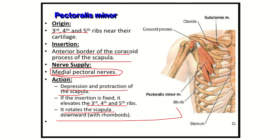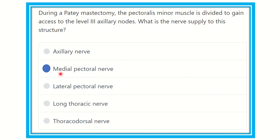These three actions are usually not the most important to remember, but we must know the origin — third, fourth, and fifth ribs — and the insertion into the coracoid process. The pectoralis minor is supplied by the medial pectoral nerve, which arises from the medial cord of the brachial plexus. So the correct answer is the medial pectoral nerve. Thank you all.